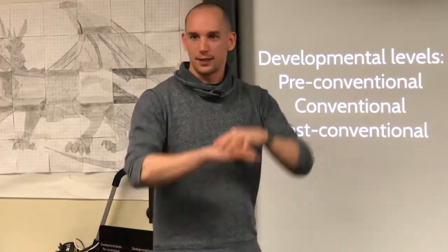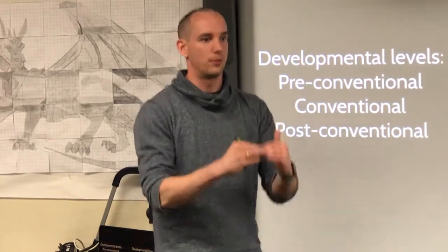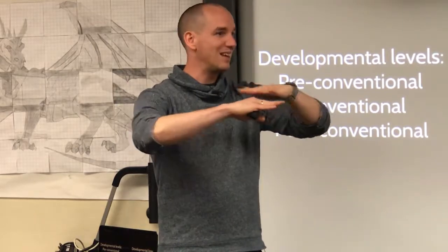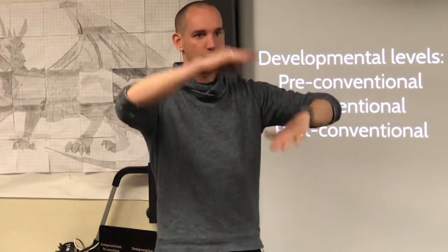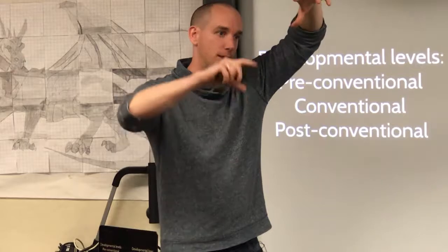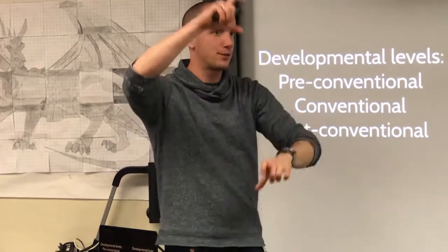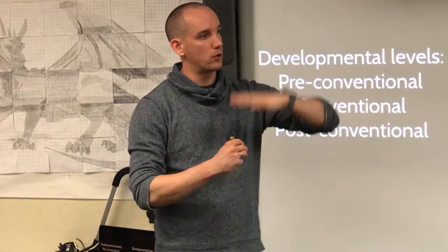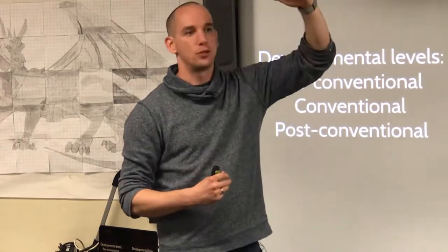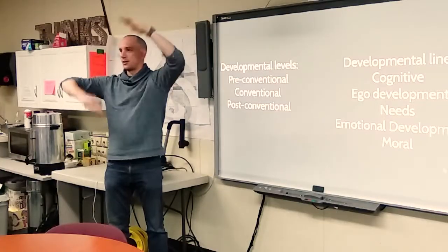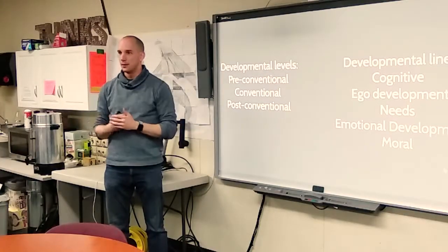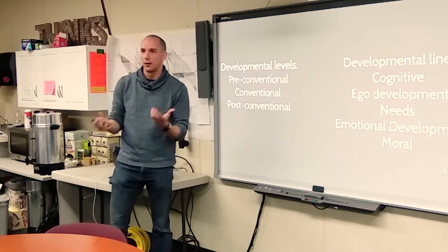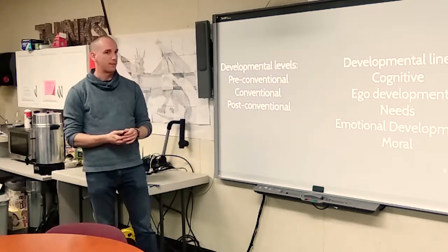Our tendency is to see the kid as one whole — you are developed at this level. But there's virtually nobody who is completely synchronous. Almost everybody is asynchronous: this area is more developed, this maybe a little bit less, and that goes back and forth. What turns out is that the further out of the average you are, the bigger the asynchronicity is going to be. That's just statistics.